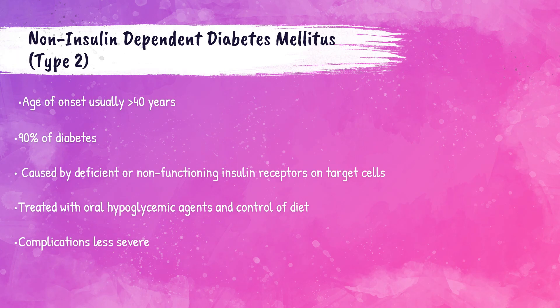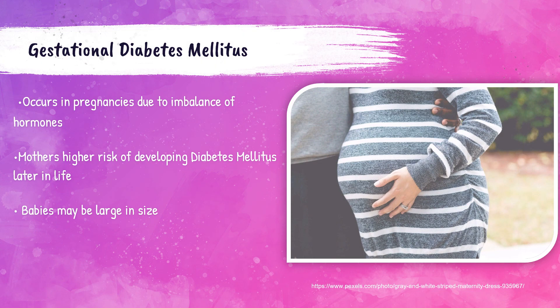Type 2 diabetes mellitus is also called non-insulin-dependent diabetes and usually occurs in patients after 40 years of age. It is the most common form of diabetes mellitus and is caused by a deficiency or non-functioning of insulin receptors. It is generally less severe than type 1 and can be treated with medication and diet control. Gestational diabetes mellitus occurs in a small percentage of pregnant women due to hormonal imbalance. Women who experience gestational diabetes are not guaranteed to develop diabetes after delivery, though it can occur. A common complication is newborns being larger in size.